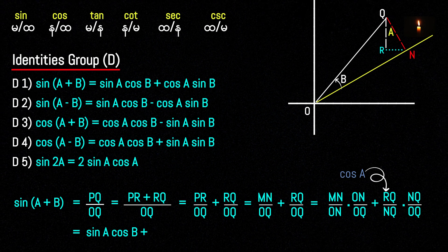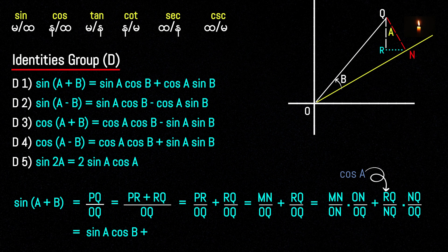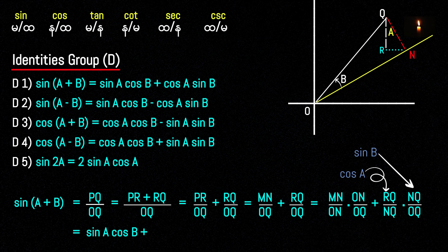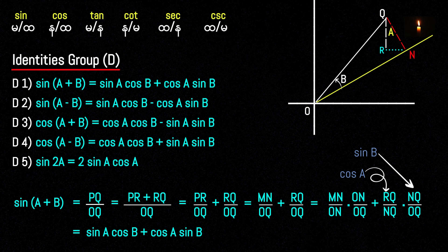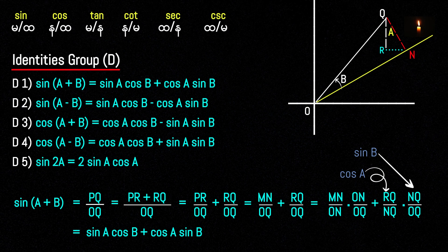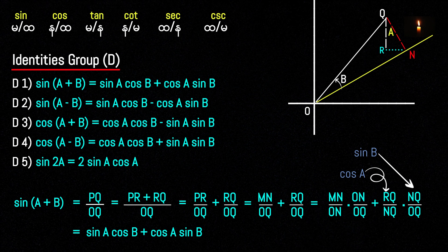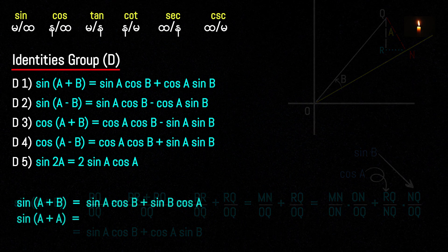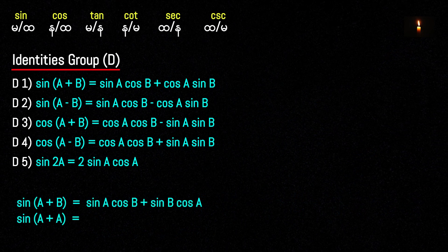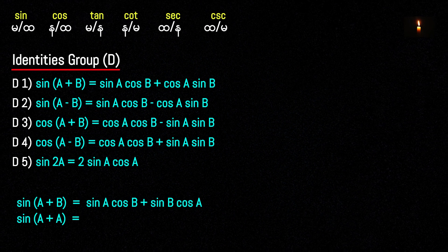Yes, I know — QA, PA. So, the outline: sin(A+B) equals sin B plus cos A sin B. Now that gives us identity D1. So, sin(A+B) is confirmed as identity D1, and D1 through D5 take the same form.